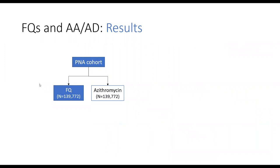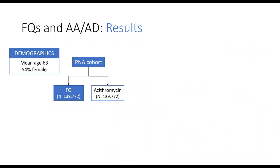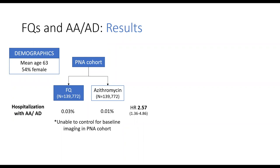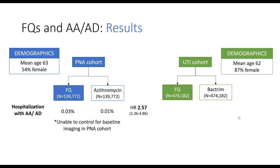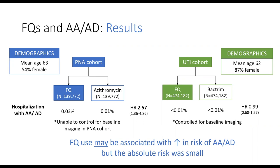In the pneumonia cohort, patients were on average 63, pretty evenly split between men and women. They did find that fluoroquinolones were associated with a significantly increased risk of aortic aneurysm and dissections, though the absolute risk was small. However, they were unable to control for baseline imaging in this cohort. In the UTI cohort, patients were the same age, overwhelmingly female, and here they did not find any significant increase with fluoroquinolone use—and they were able to control for baseline imaging. The authors concluded that fluoroquinolone use may be associated with a small increase in aortic aneurysm or dissection, but the absolute risk was small.